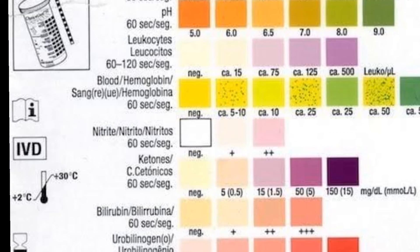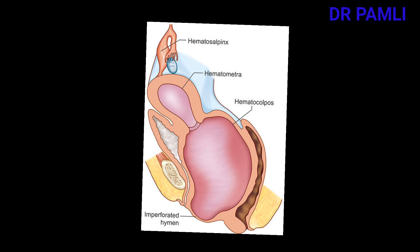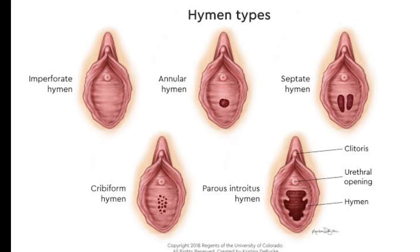Urinalysis can also be done to ensure the patient is not presenting with any urinary tract infection. As advice to the general population: patients presenting with hematometra or hematocolpus are sometimes subjected to traditional beliefs about curses or spells. We advise that young or older ladies presenting with cyclic cramping, increased urinary frequency, dysmenorrhea, or amenorrhea for a given period of time should be brought in for proper medical evaluation.